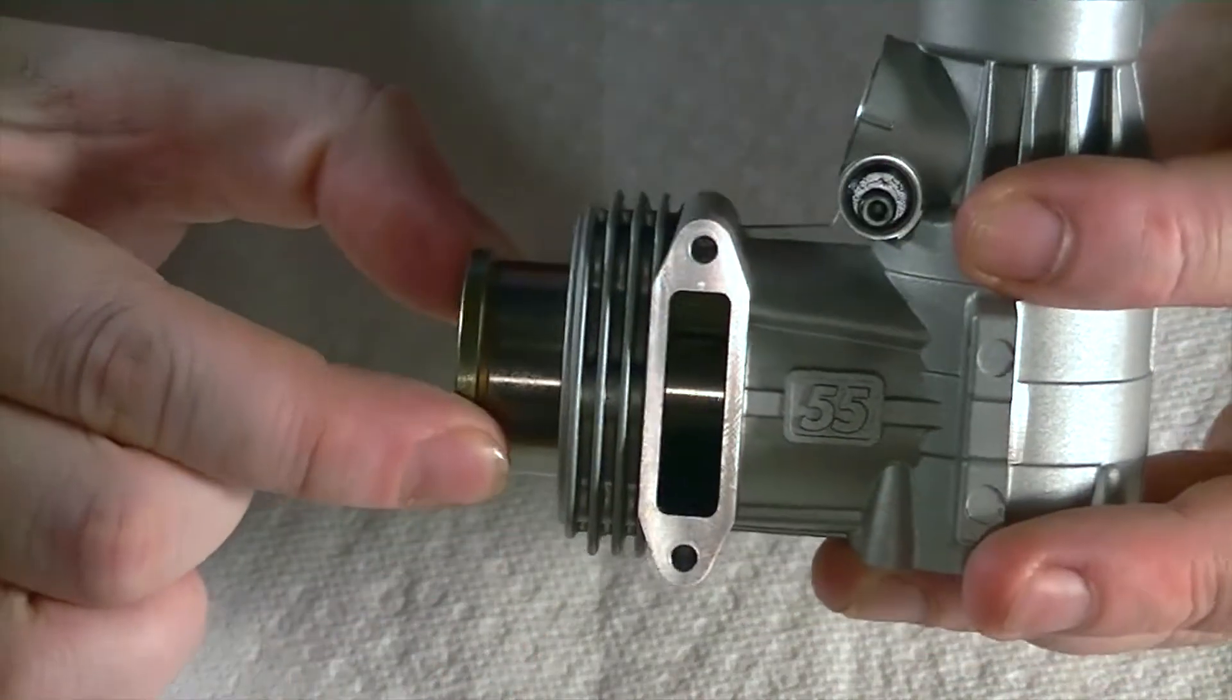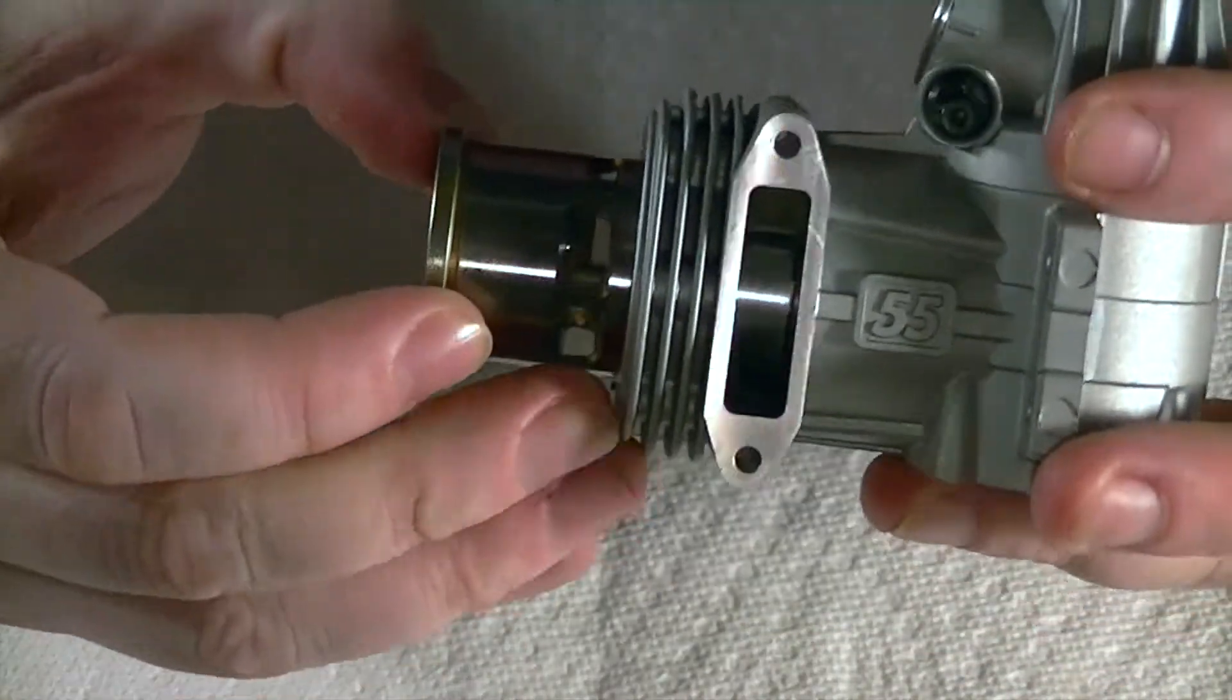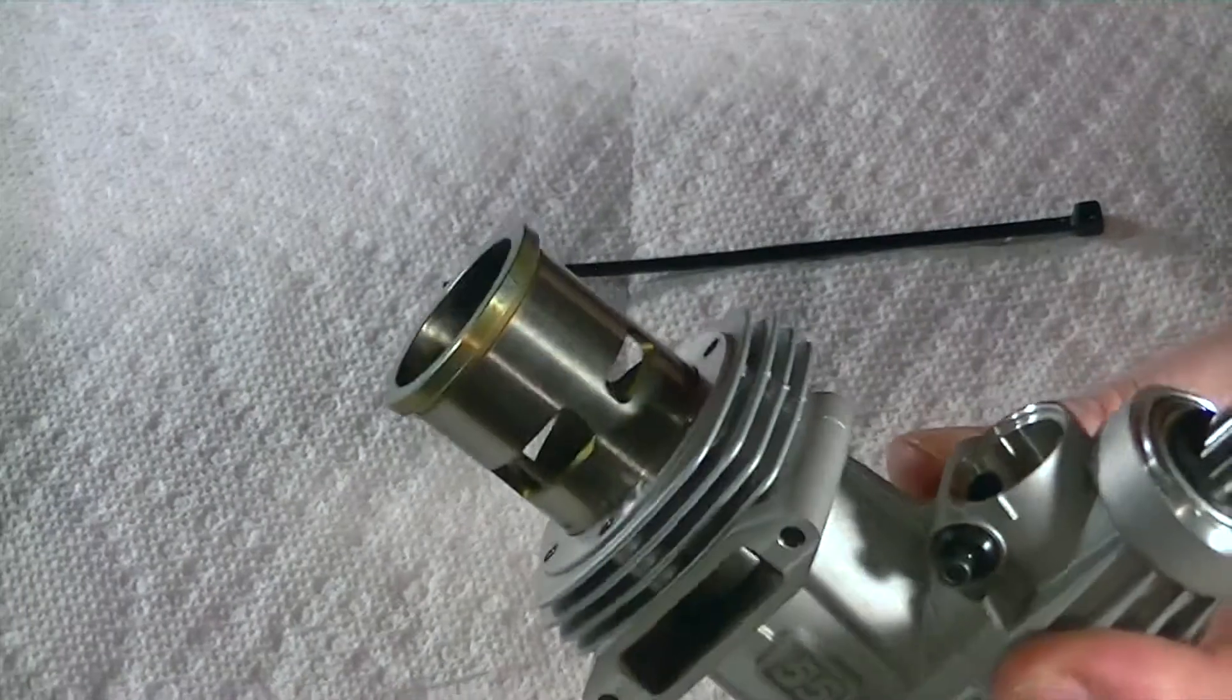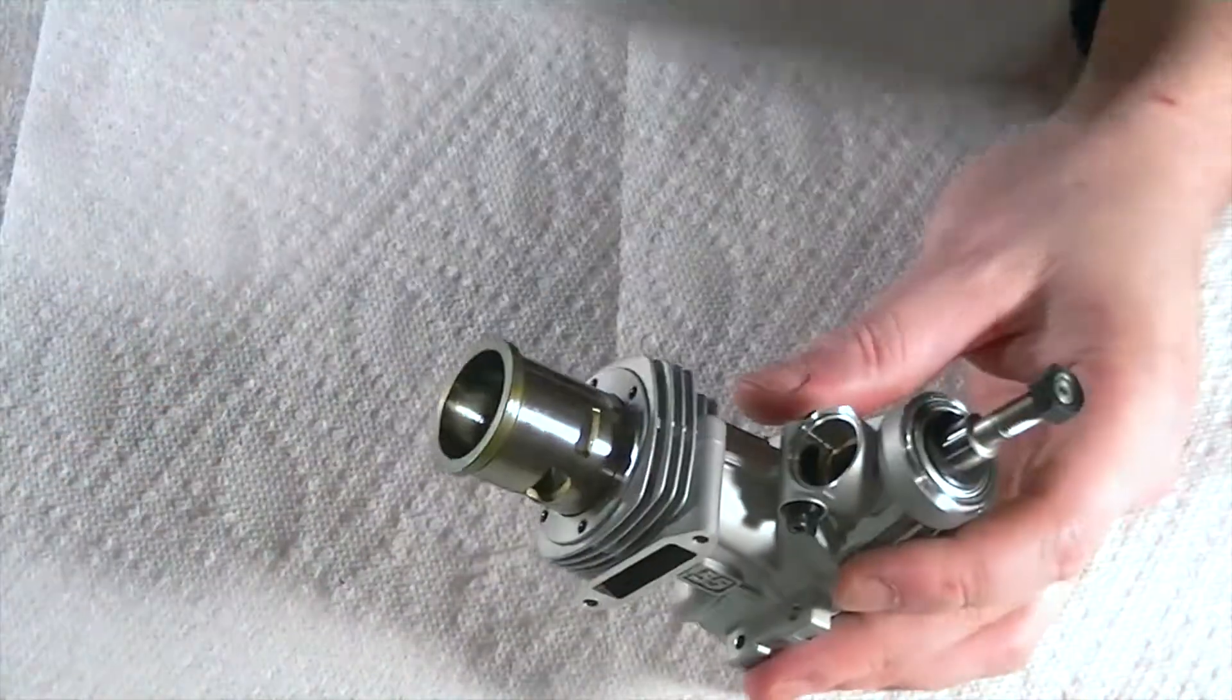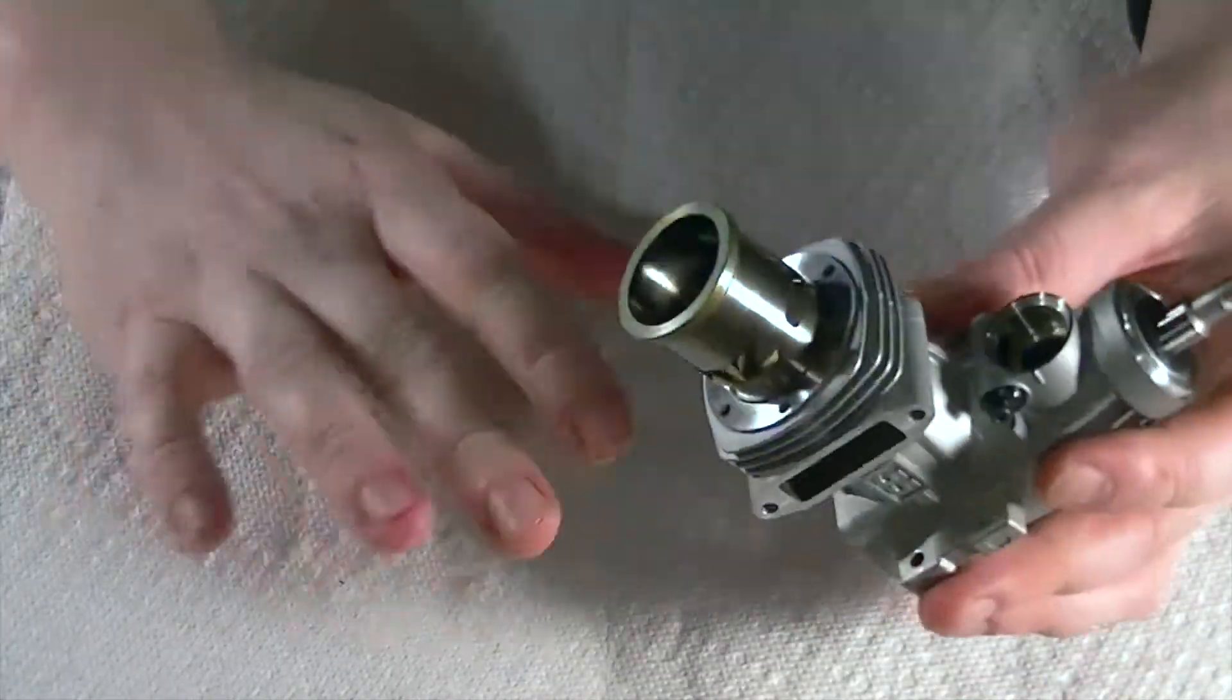Now I should be able to, yep, there we go. Sleeve comes right out. Piston liner slides right out. So let me zoom back out just a little bit. And that's all it took guys was just a freaking zip tie. And we didn't cause any damage to the motor.